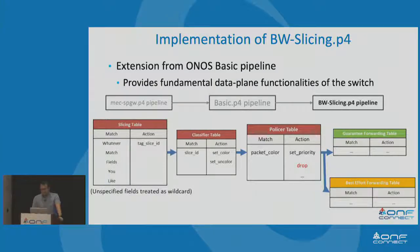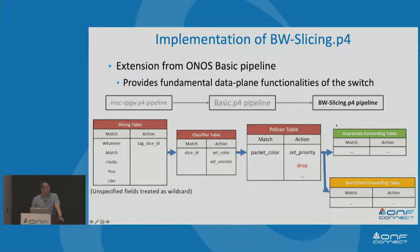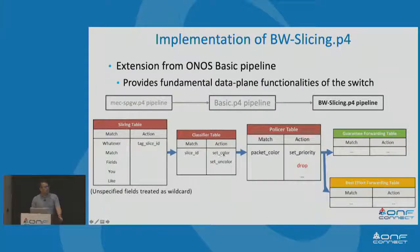Here is the pipeline design of our data plane, showing only the bandwidth slicing part. In general, our pipeline goes through MEC, SP Gateway P4, and to basic — the original ONOS basic P4 pipeline — and then the bandwidth slicing P4. Our meter P4 program is an extension to the ONOS basic pipeline. The packet first goes to the slicing table for slice identification, where the match field can be anything you like. Then it goes to the classifier table to color the packet green, yellow, or red. Green packets go to high priority, yellow to lower priority, and red are dropped.